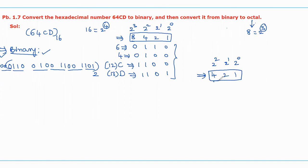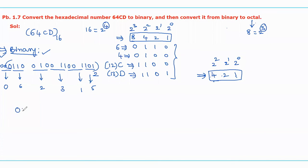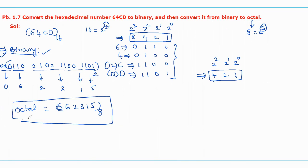Depending on these three binary bits, we can write the equivalent octal value for each group. The equivalent octal digits are: 0, 6, 2, 3, 1, 5. Hence, the octal value for the obtained binary is 062315 with base 8. This is the answer for the given question.